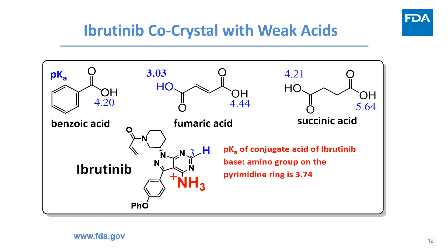In the same patent, preparation of Ibrutinib co-crystals with weak acids such as benzoic acid, fumaric acid, and succinic acid are reported. The pKa range of these three weak acids is between 3 to 5. Note the pKa of the conjugate acid of Ibrutinib base is 3.74. Also notice the aromatic hydrogen on the pyrimidine ring, also known as hydrogen 3. Its chemical shift delta is characteristic of co-crystal versus salt, and will be used as additional evidence to meet FDA criteria.